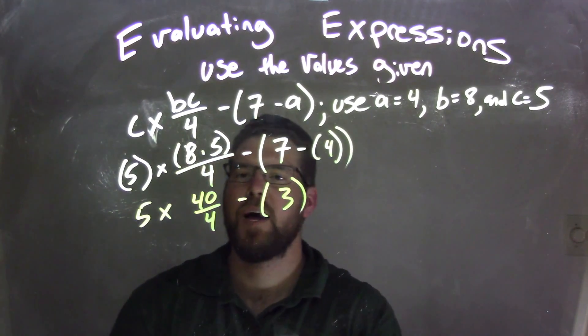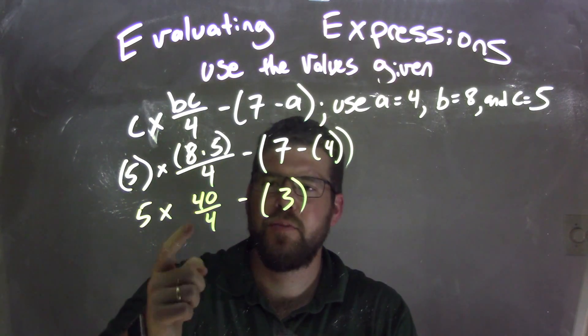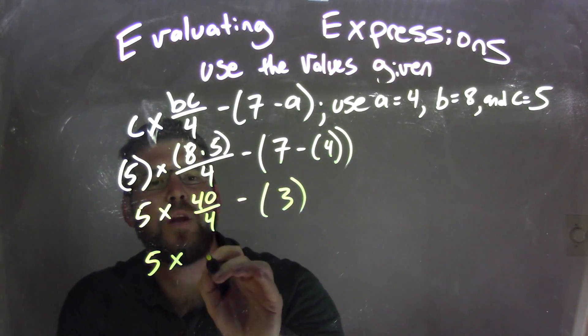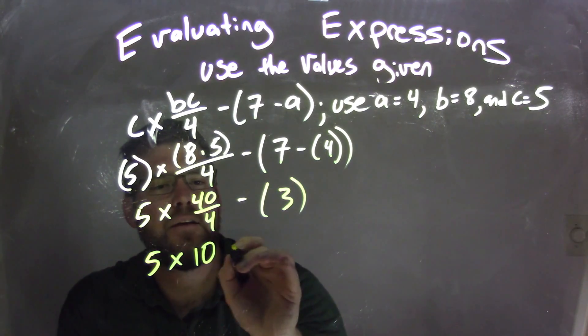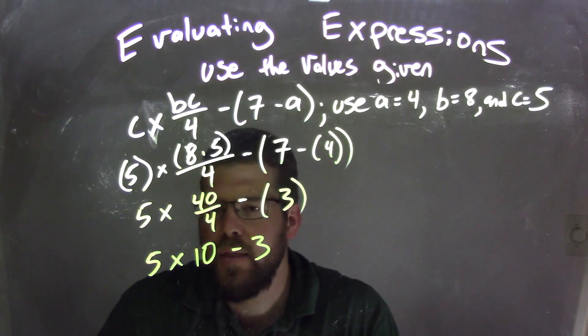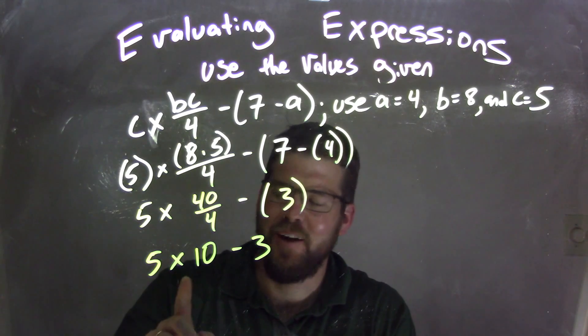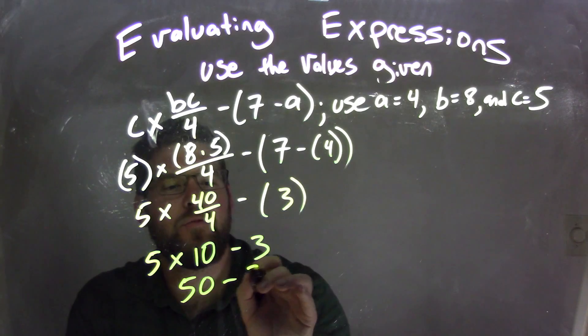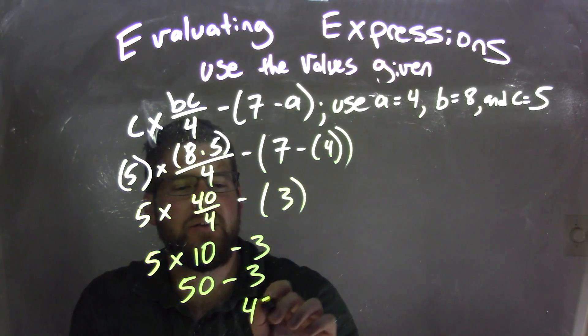Well, what's 40 divided by 4? That's our next step here. We have to simplify that fraction. So 5, I'm going to keep on the outside, and 40 divided by 4 is 10 minus 3. And lastly, or not lastly, almost, yeah, penultimately, 5 times 10 is 50. Multiplication comes before subtraction, and 50 minus 3 is 47.